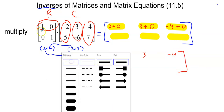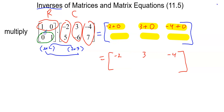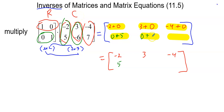Now the bottom row. First column: 0 times anything is 0, plus 1 times 5 is 5, so that's 5. Middle column: 0 times anything is 0, plus 1 times negative 6, so negative 6. And then 0 times negative 4 is 0, plus 1 times 7 is 7. And so we get our answer.